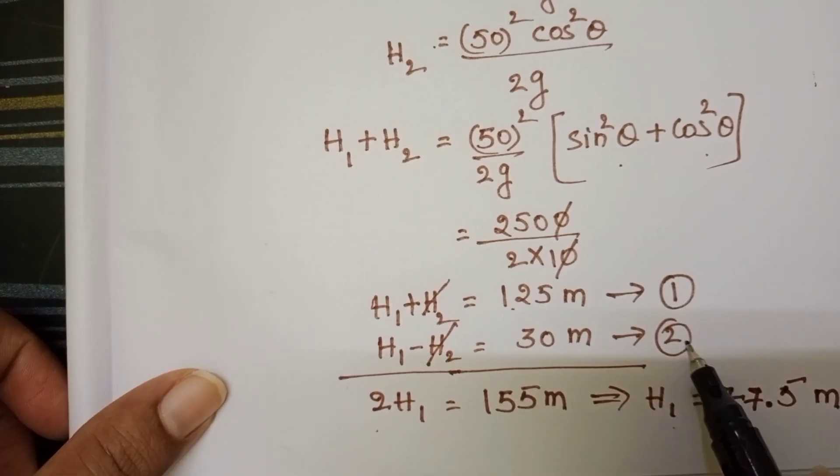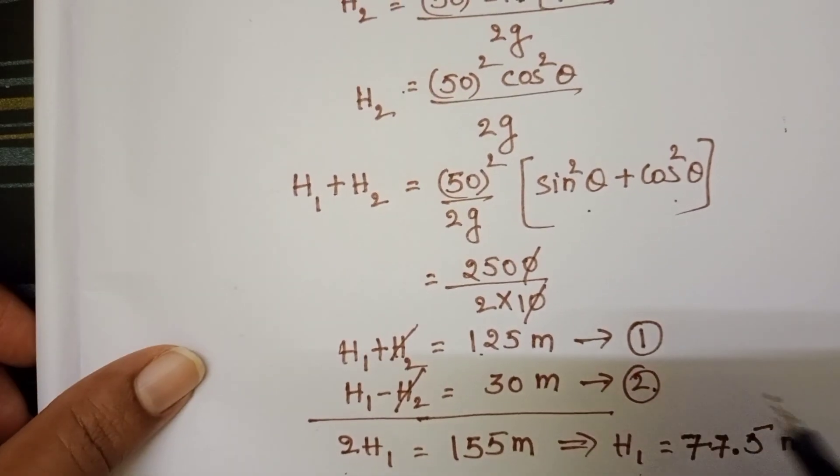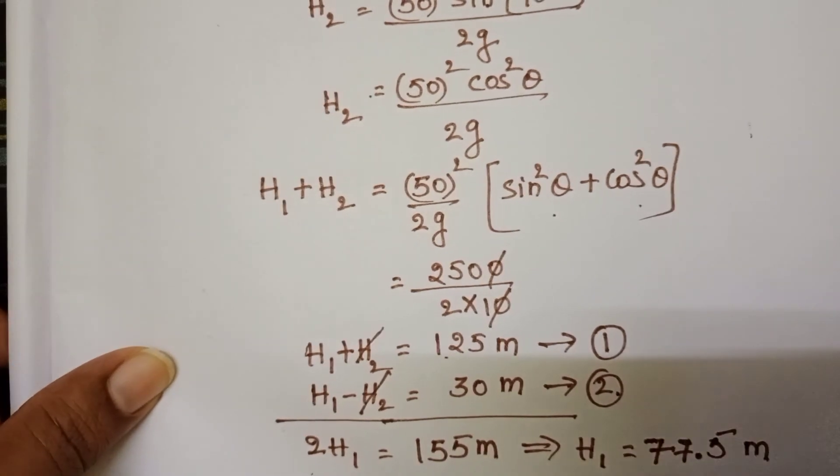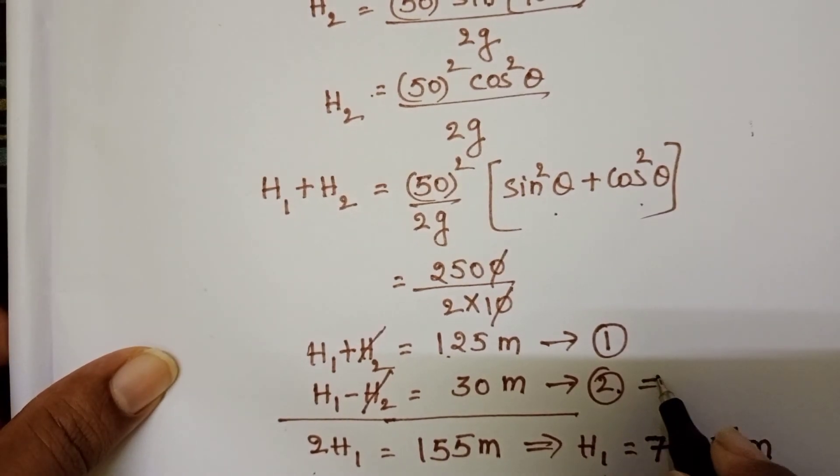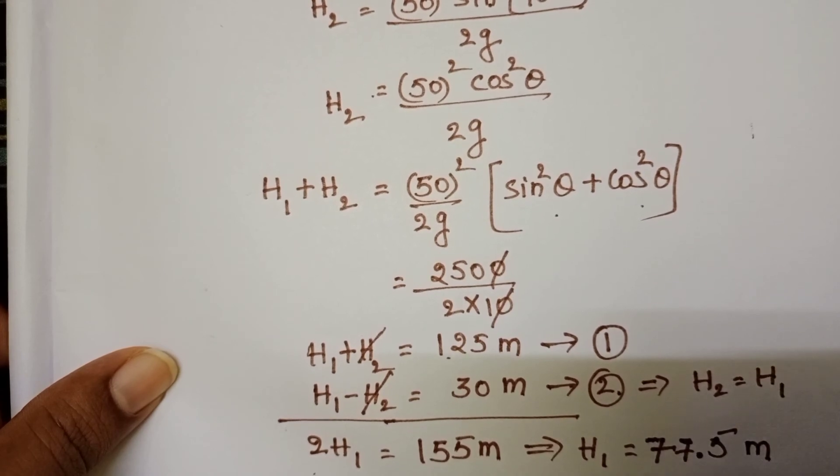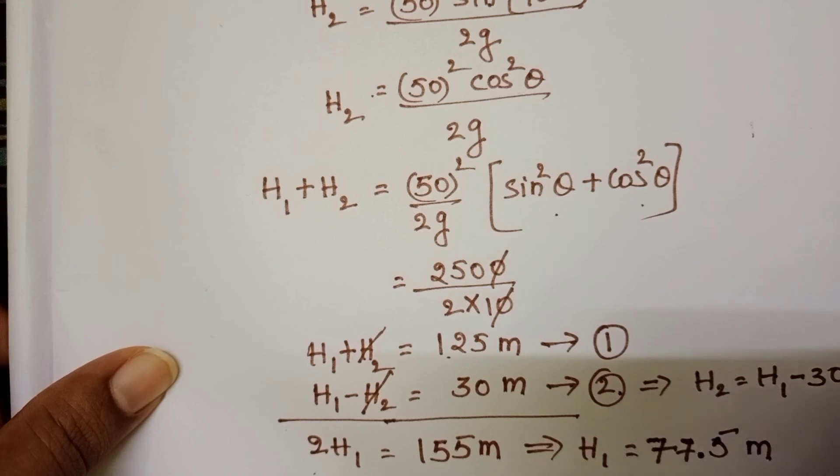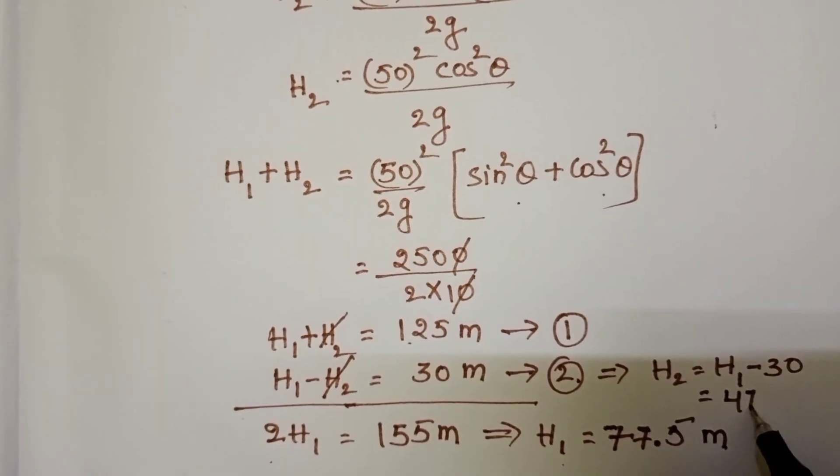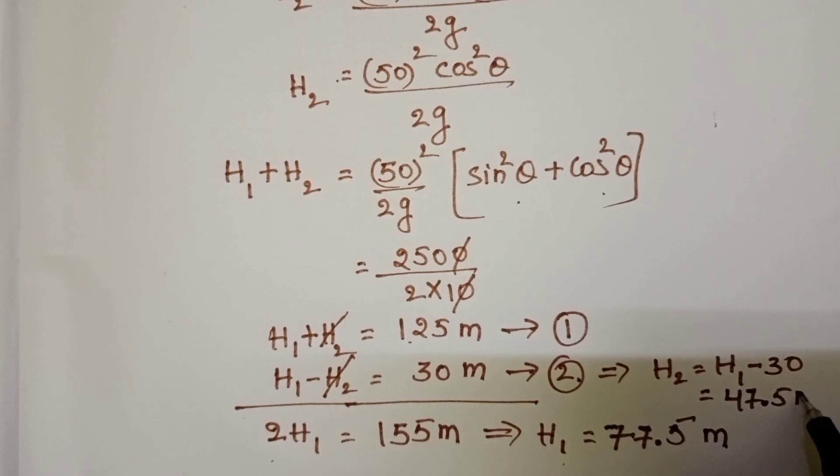Substitute H1 in second equation. From this H2 equals H1 minus 30. So 77.5 minus 30 equals 47.5 meters.